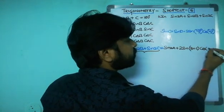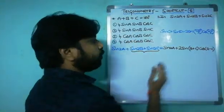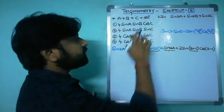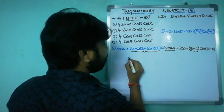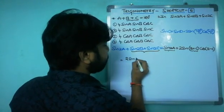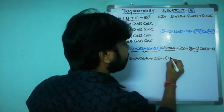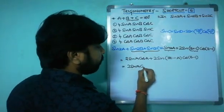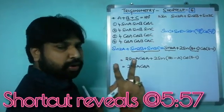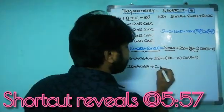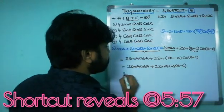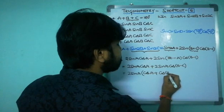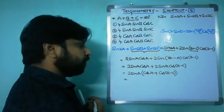Similarly, cos((2B−2C)/2) gives cos(B−C). Now sine 2A can be written as 2 sine A cos A. Since B+C equals 180−A, we write the full expression as 2 sine A cos A plus 2 sine(180−A) cos(B−C). Since sine(180−A) equals sine A, this becomes 2 sine A cos A plus 2 sine A cos(B−C), giving us 2 sine A [cos A + cos(B−C)].